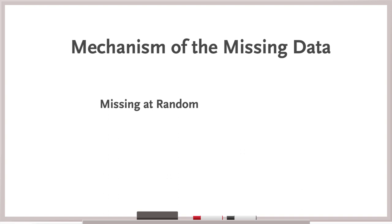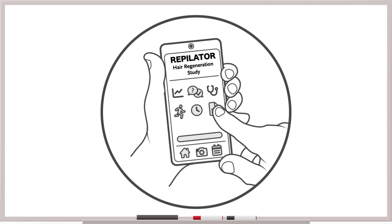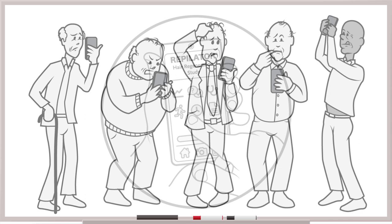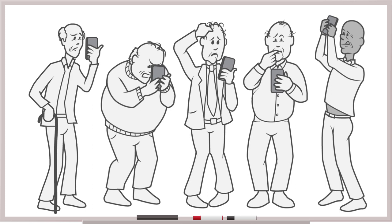The mechanism is deemed to be missing at random when the probability of missing data is related to some other known variable. For example, despite your best efforts, some older participants find the smartphone study app hard to use and have difficulty uploading photos of their hair growth. In that case, the probability of missing data — hair growth — is related to the patient's age, but unlikely related to actual hair growth.